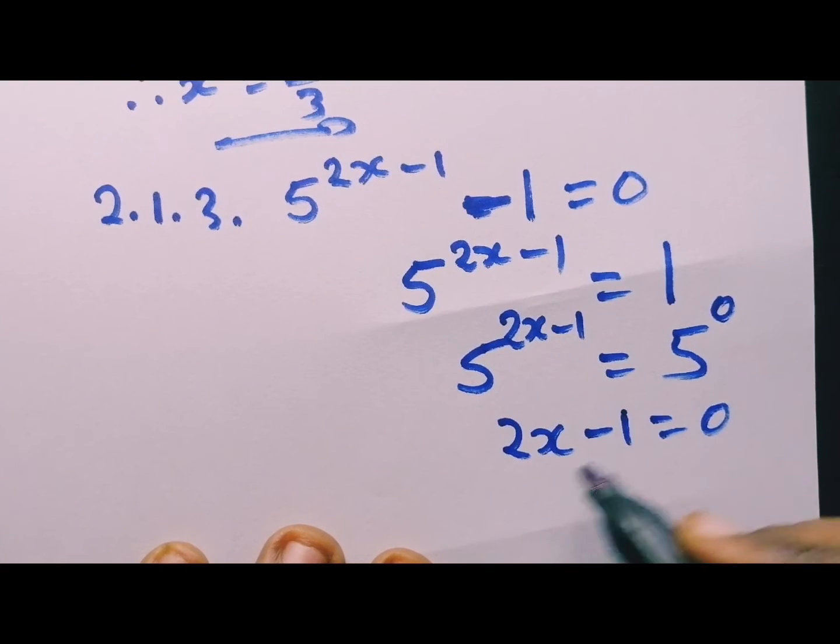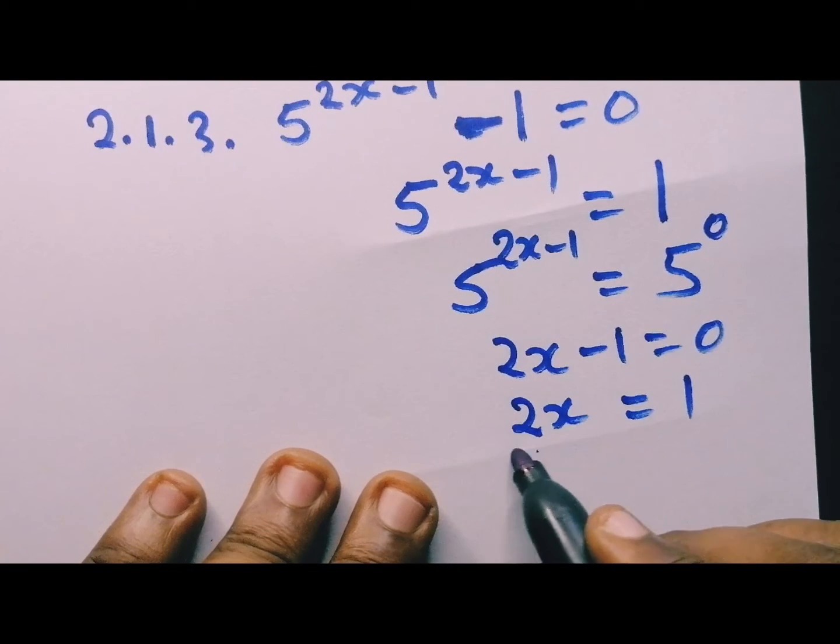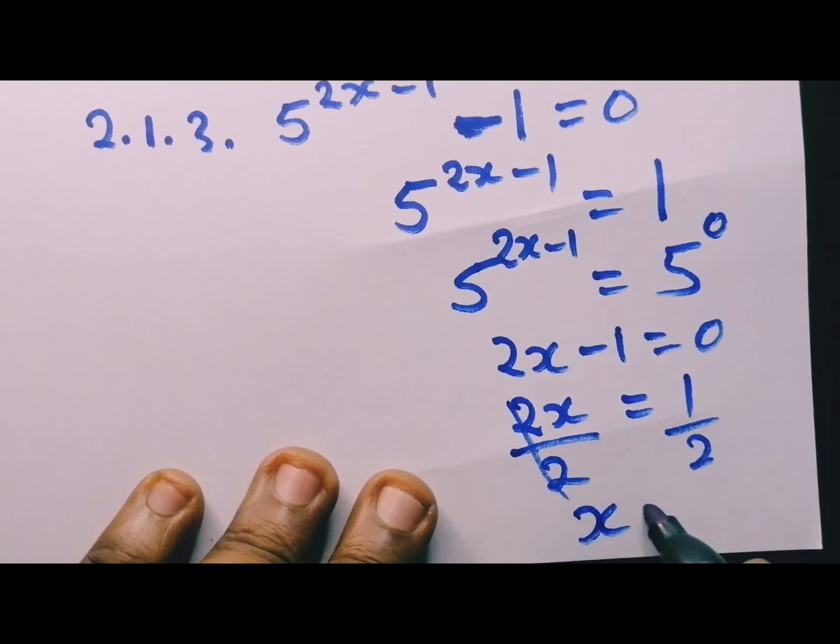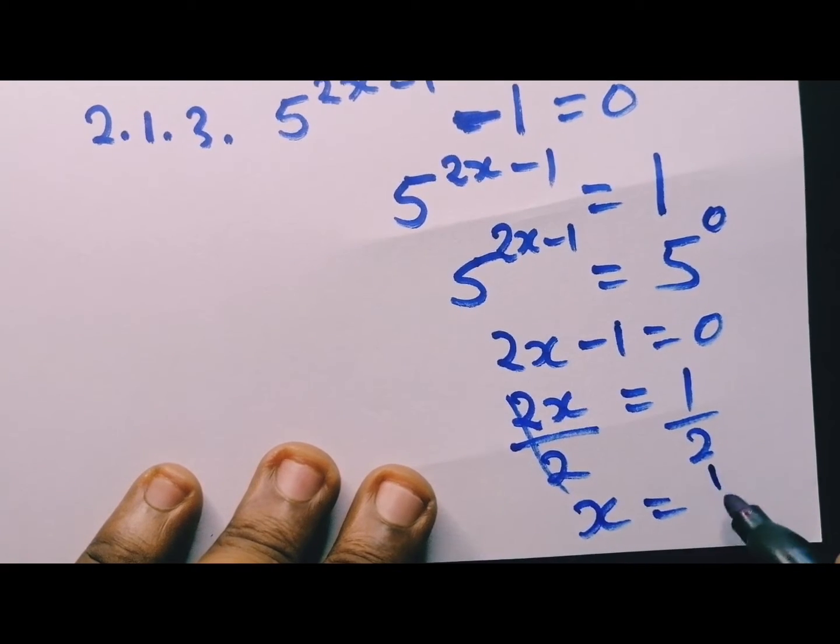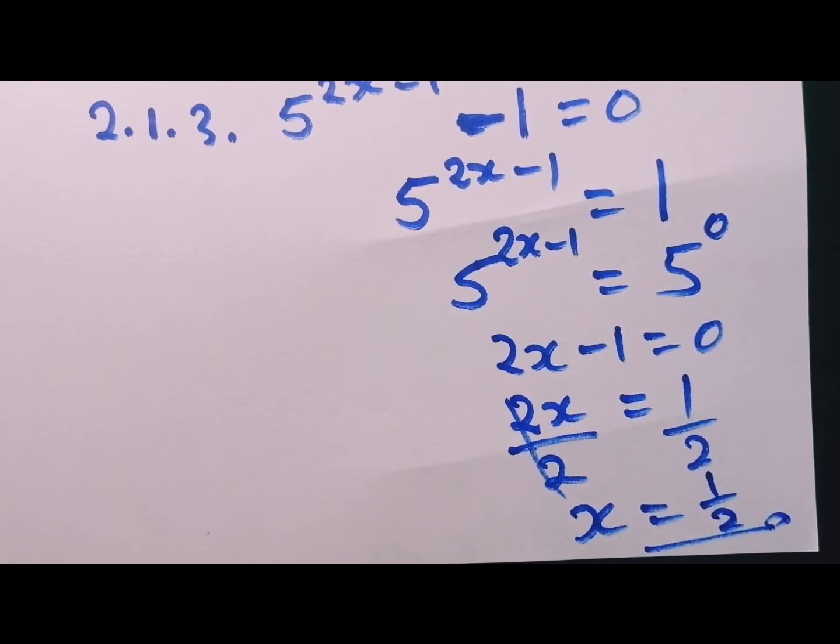And then from here, you take this one to the other side again. We are left with 2x equal to 1. So we need x, remember, not 2x. So divide by 2, divide by 2. So my x will be equal to half. So pay attention to these small problems, and don't forget to like if you are still loving or liking this content.